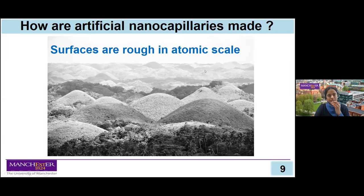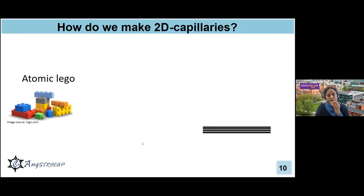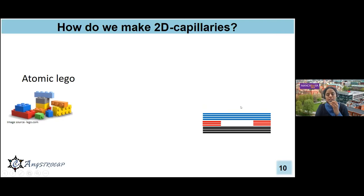2D materials are atomically flat and make a perfect building block for making 2D capillaries. Basically, 2D capillaries are built using 2D materials as atomic-scale legos. We start the construction using three layers — it's like a three-layer sandwich: a bottom layer, a spacer layer which has a pre-structured cavity, and a top layer. Combining these three layers as a sandwich leaves an atomic-scale capillary in the middle.